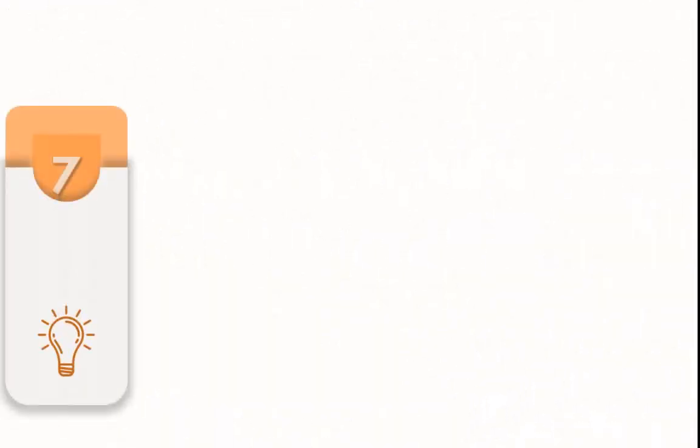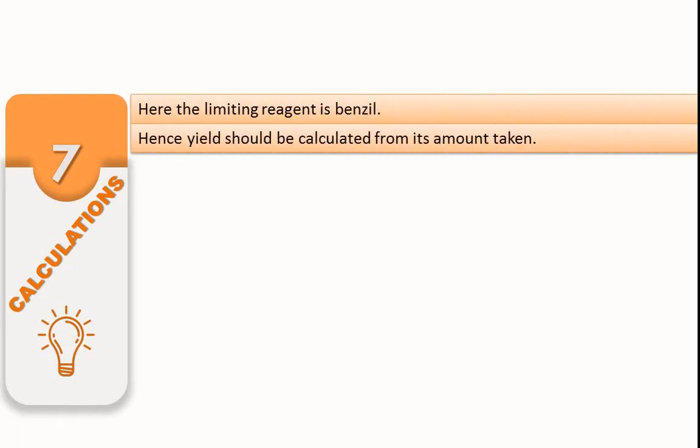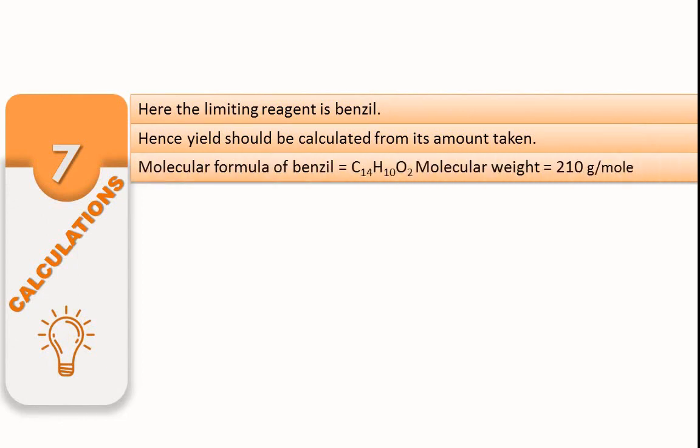Let's do the calculations for theoretical yield, practical yield, and percentage yields. Here the limiting reagent is benzil, hence yield should be calculated from its amount taken. Molecular formula of benzil is C14H10O2, molecular weight is 210 g/mol.